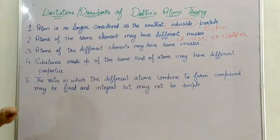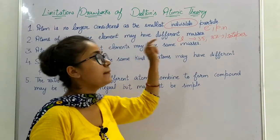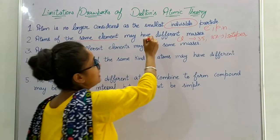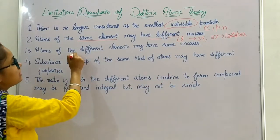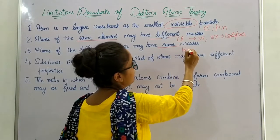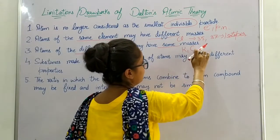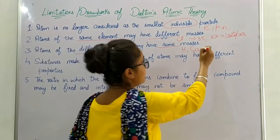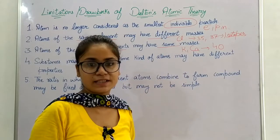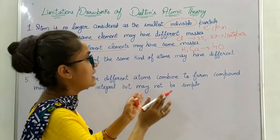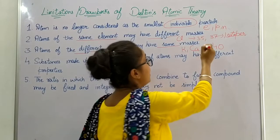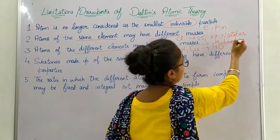The third limitation states that atoms of different elements may have the same masses. For example, potassium and calcium both have the same mass number of 40 but different atomic numbers. These atoms of different elements having the same mass number but different atomic numbers are known as isobars.